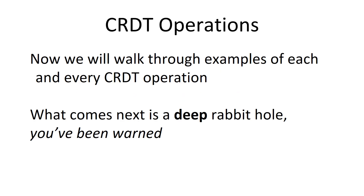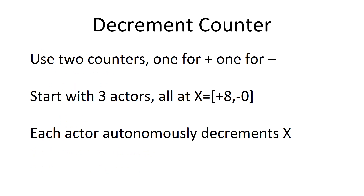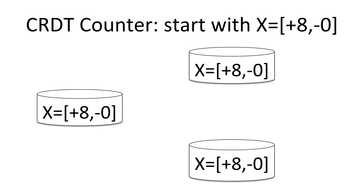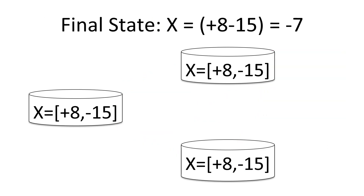Now we're going to go through those four operations on a bunch of different data types. Here's the table of operations — we're going to do seven different data examples, and then at the end we're going to go into causal consistency. First example: we're going to decrement the counter we were incrementing before. We start with X equals 8, and the trick to decrementing and incrementing at the same time is you just have two different counters — one for increments and one for decrements. Everyone starts with X equals 8 (represented as +8 minus 0) and they subtract 4, 5, and 6 respectively. In the end, +8 minus 15 at all actors evaluates to minus 7.